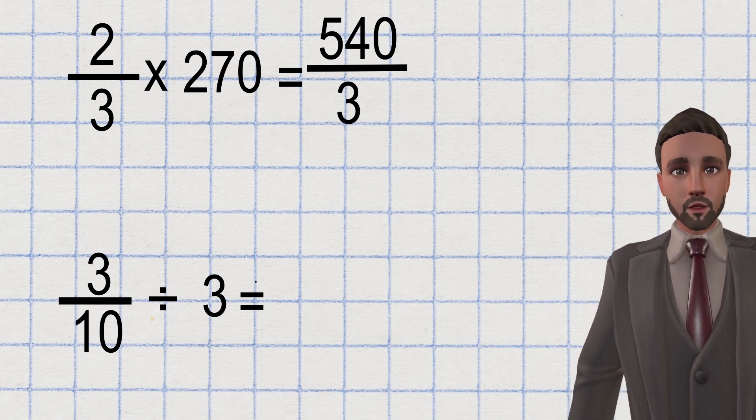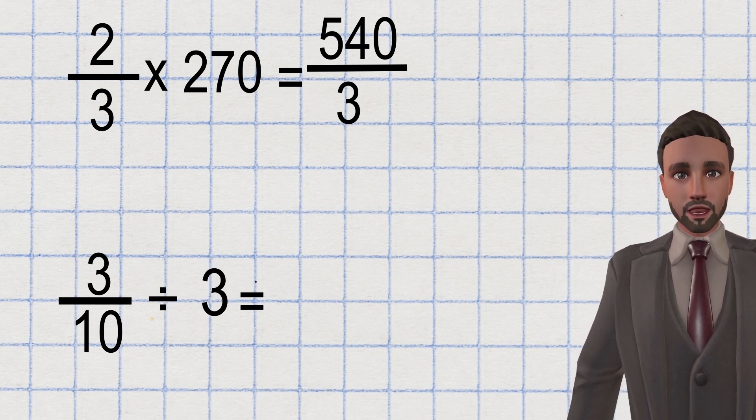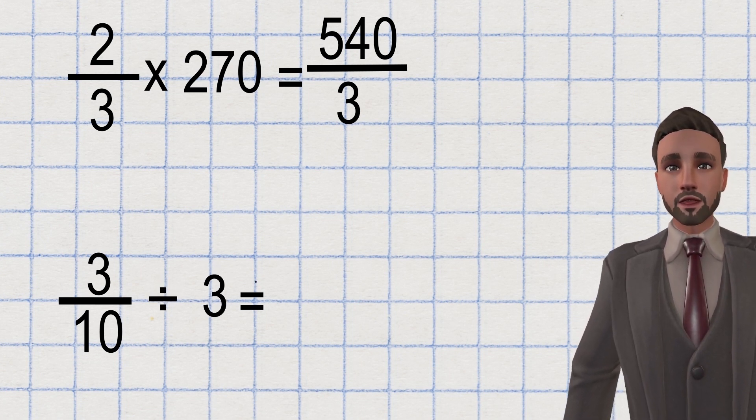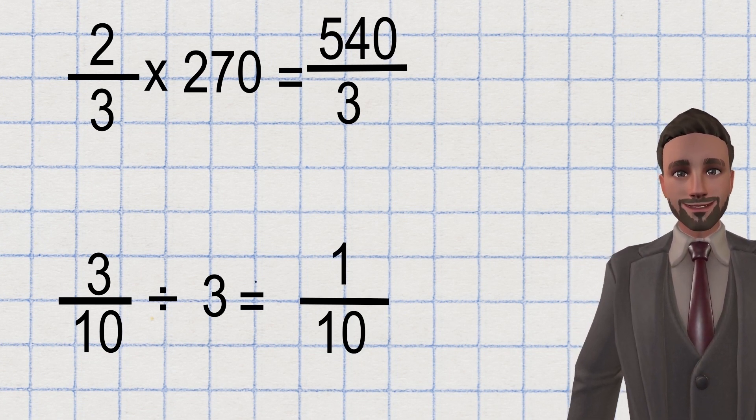With a division question, we have three parts out of 10. And we want to divide those three by three as well. Well, three can be shared out with three people. Each person would get one part. So our answer would be one tenth.